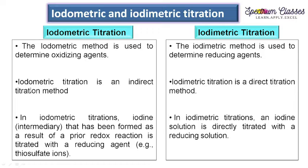The second important point: iodometric titration is an indirect titration method, and iodimetric titration is a direct titration method. Before going further, I want to bring to your notice that indirect titration method is something different compared to back titration method. Indirect is something different; back titration is something different.